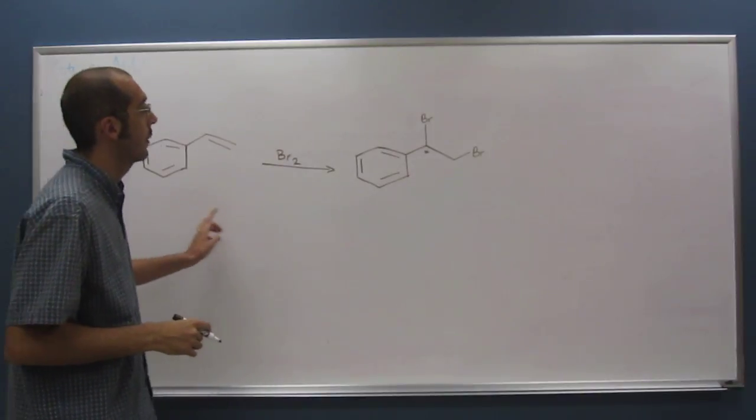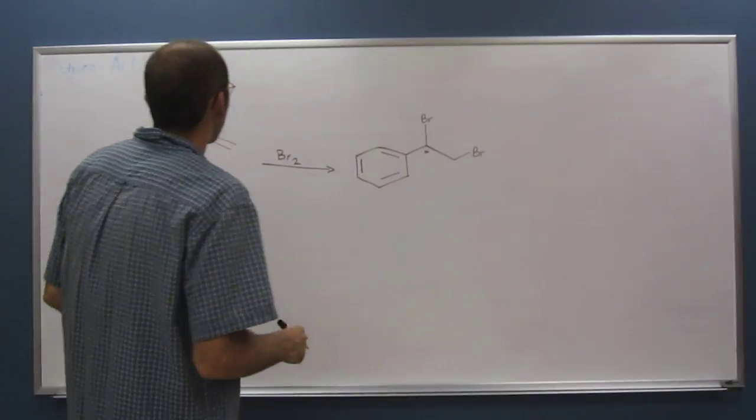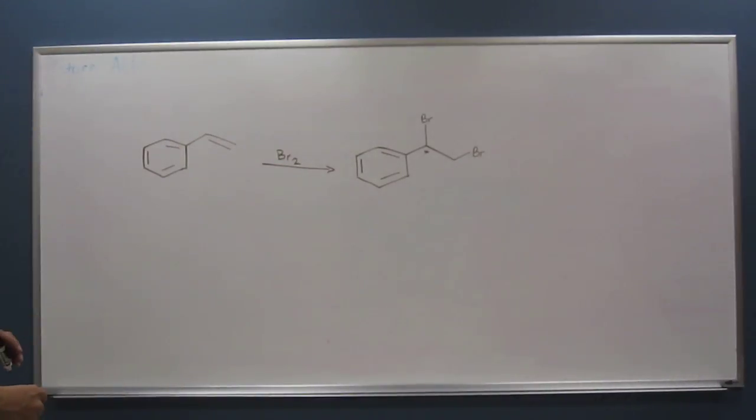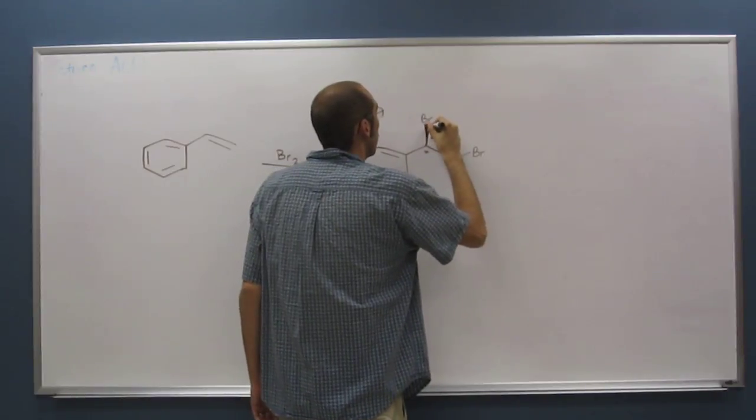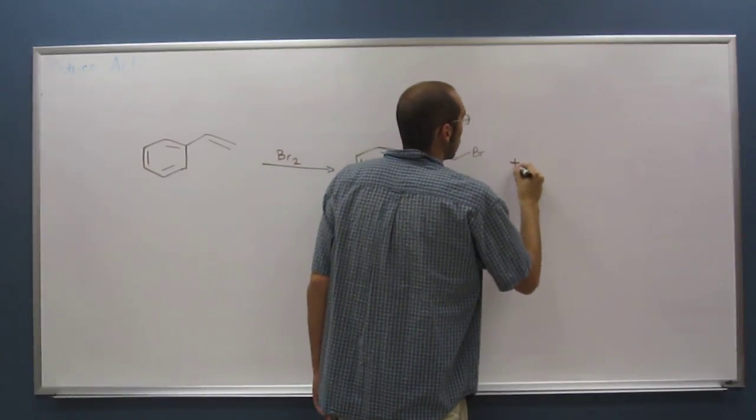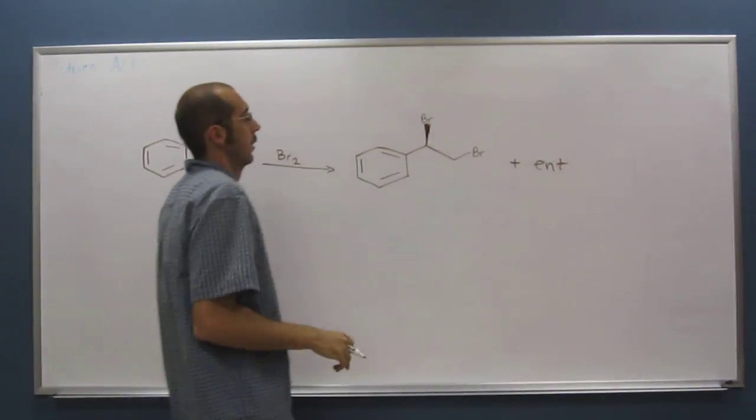So you can see, just make the diagram right here. We've got a star because we're going to make a stereo center there. So it would be, of course, you can also write it like this plus an enantiomer.